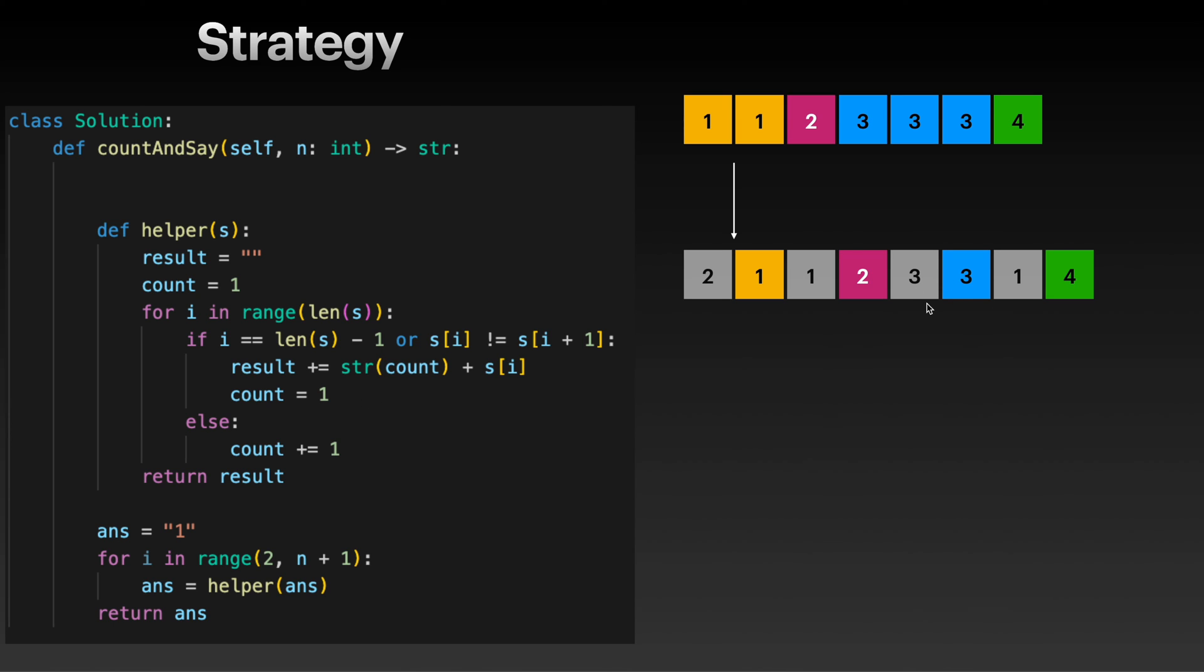And we are at here, and now notice that we are in this case, right? i is equal to len(s) - 1, so count is 1 and then we have s[i] is 4, so we have "1" and "4". So that is that, and let's look at the code and see what we get.